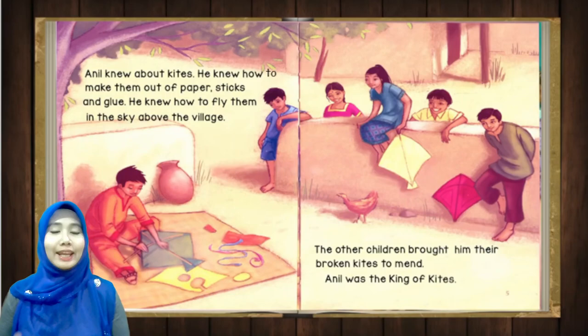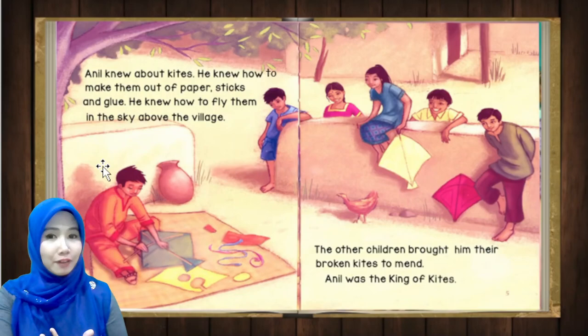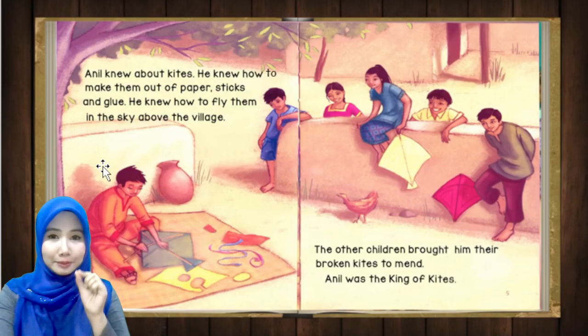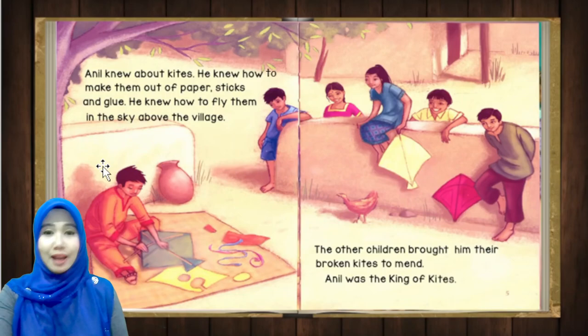Annual is the name of the boy — this is Annual, the character in the book. He knew — past tense of know, tahu — about kites, tentang layang-layang. What is the meaning of kite? Layang-layang. He knew, dia tahu, how to make — macam mana nak buat — them, mereka, out of paper, daripada kertas, sticks, kayu, and glue, dan juga gum.